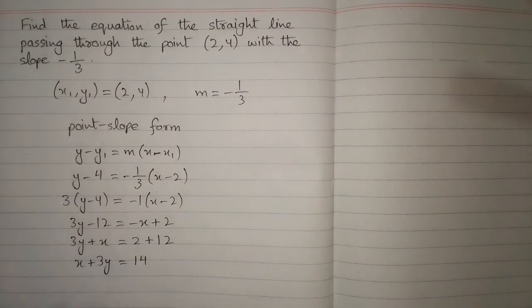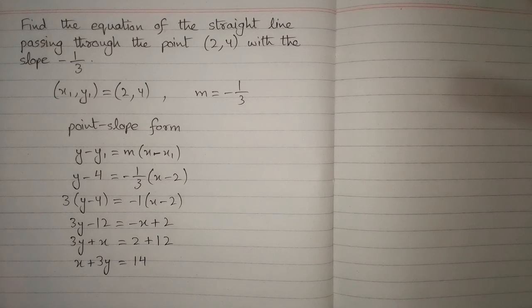So x plus 3y equals 14 is the required equation of the straight line passing through 2 comma 4 and having slope minus 1 upon 3.